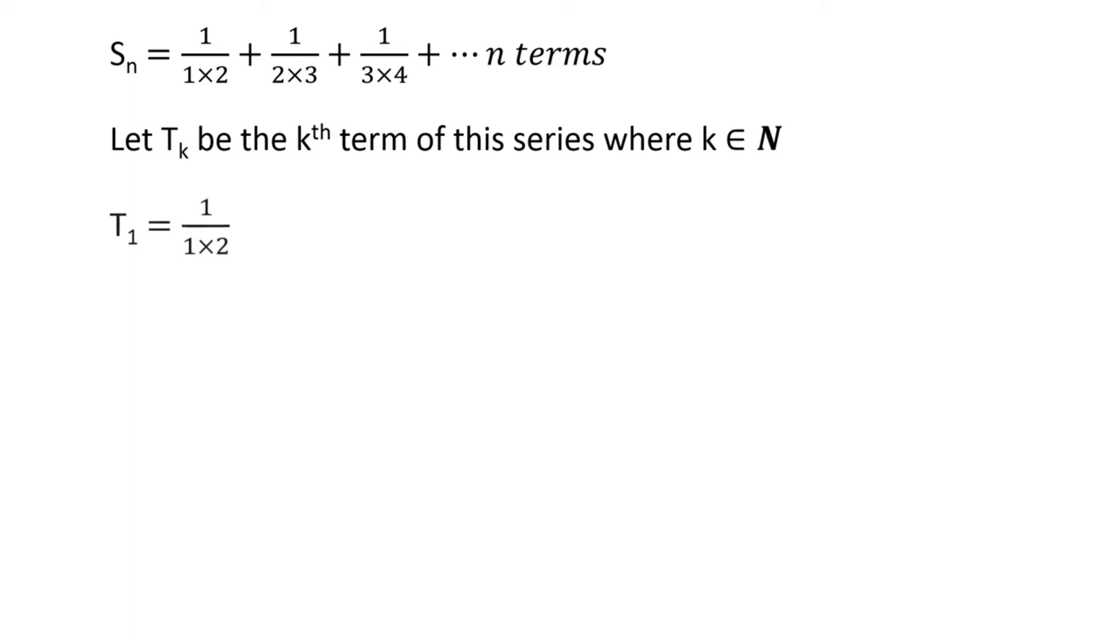Thus, we have T1 equals 1 upon 1 times 2, T2 equals 1 upon 2 times 3, T3 equals 1 upon 3 times 4. Observe that the kth term of this series equals 1 upon k times k plus 1.